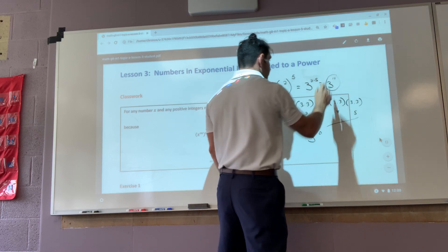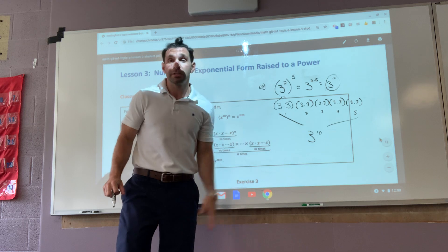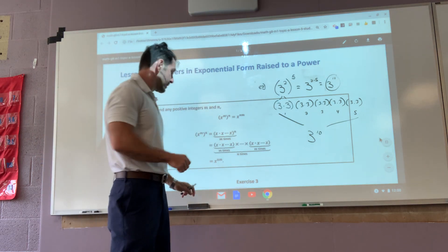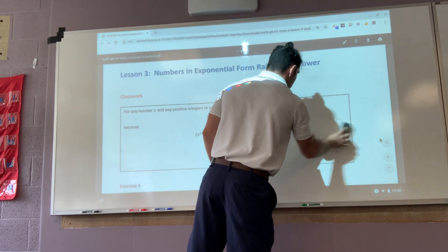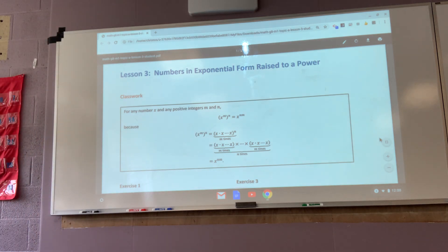which I wanted to have the form of three to the tenth. So when you have an exponent raised to another exponent, you multiply them. Okay? That's what this is saying. So in different words of variables, that is what it's saying. Okay?